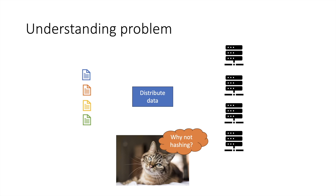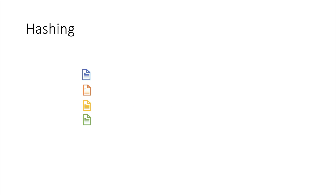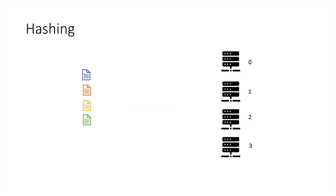When you think about distributing data, the first thing that comes to mind is hashing. You can use a hash function to distribute data across different servers. You pass the key of the document or data to the hash function, it generates a number, and then you find the modulo of that number. Based on the output you assign it to one of the servers.